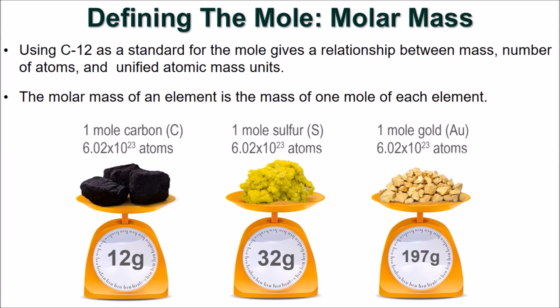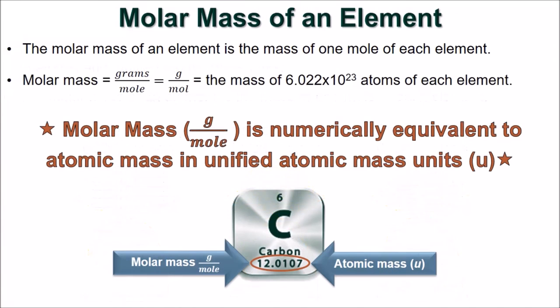Since the masses of all elements are defined relative to carbon-12, using it as a standard for the mole gives us a relationship between mass, number of atoms, and unified atomic mass. We call this relationship an element's molar mass, and molar mass is equal to the mass of one mole of any element. The units of molar mass are grams per mole, and molar mass is numerically equal to an element's atomic mass in unified atomic mass units.